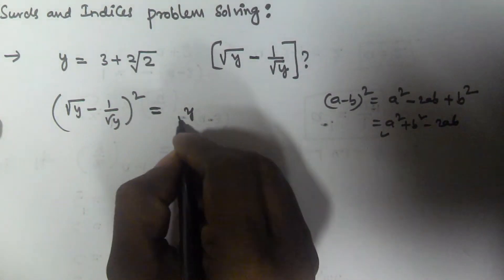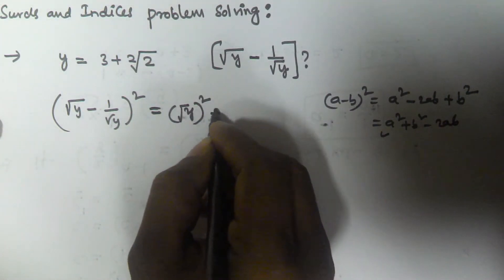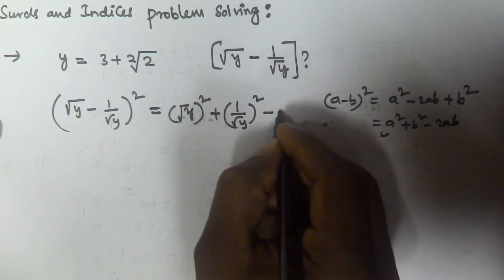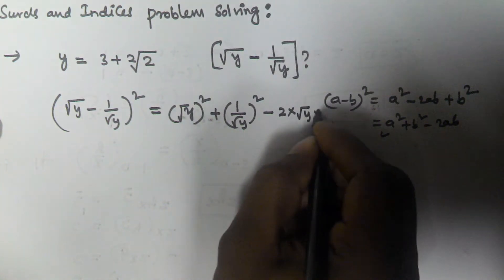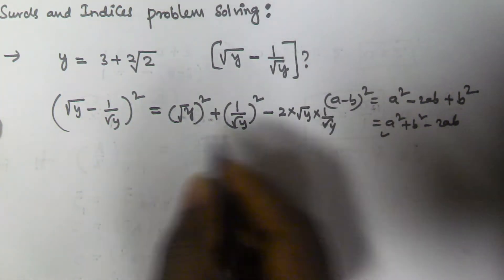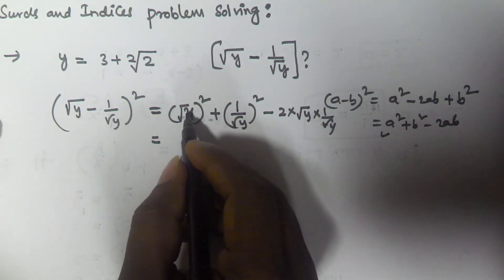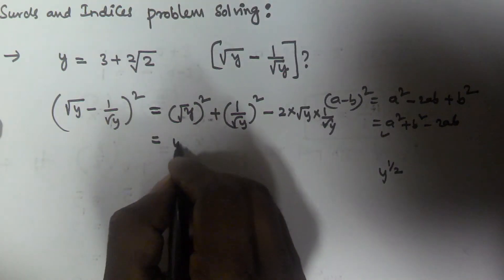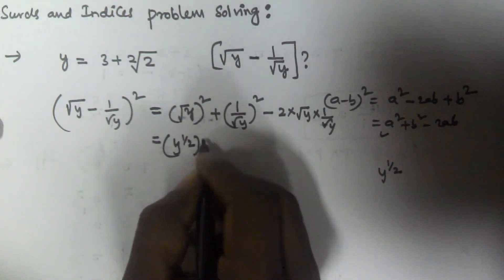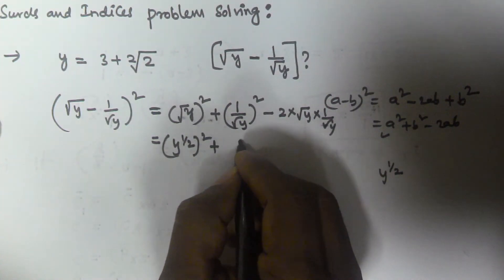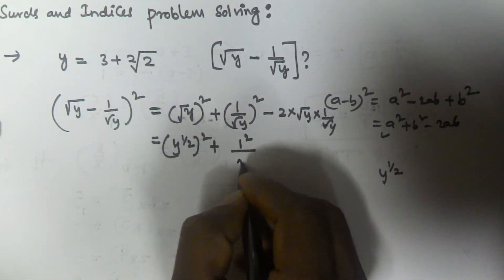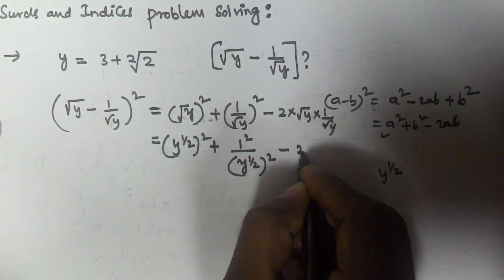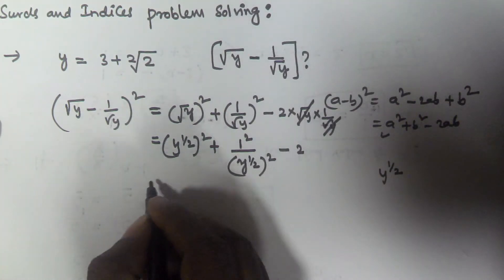Here a square is root y squared, b square is 1 by root y squared, and the middle term is minus 2 times root y times 1 by root y. Root y can be written as y to the power 1 by 2, so root y squared becomes y to the power 1 by 2 squared, which is y. Similarly, 1 by root y squared is 1 by y. The 2ab term: root y times 1 by root y cancels, leaving just 2.